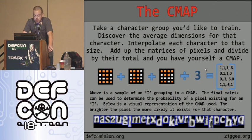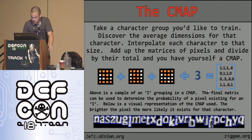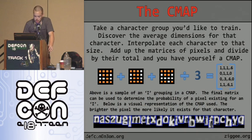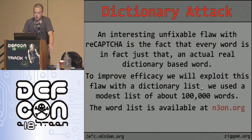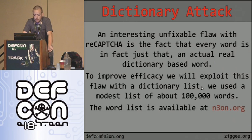The final matrix determines the probability of a pixel existing for a given character. Below is a visual representation of the cmap used in the current CAPTCHA — the brighter the pixel, the more likely it exists for that character. Letters trained less often, like 'q', appear fuzzier, while well-trained letters like 'e' look much cleaner.